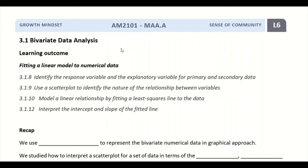Hi everyone, welcome to the sixth lesson for Topic 3.1, Bivariate Data Analysis. This is also the second lesson where we discuss numerical data. In the previous lesson, we learned to use a two-column or two-row table to display data in numerical variables, and how to draw a scatter plot as a graphical representation for numerical data. From the scatter plot, we identify and describe the association.